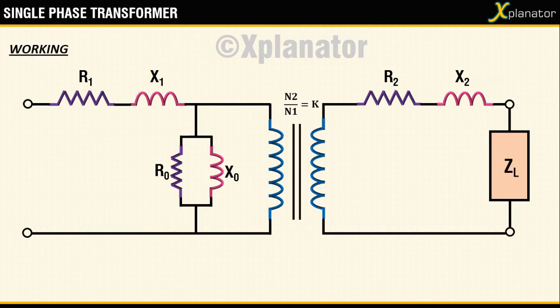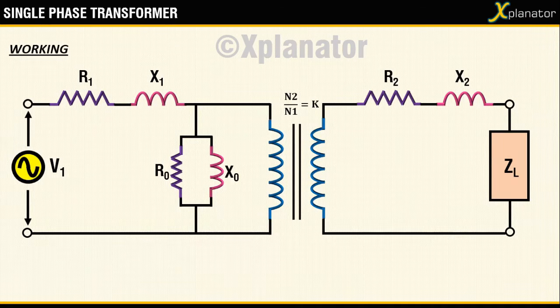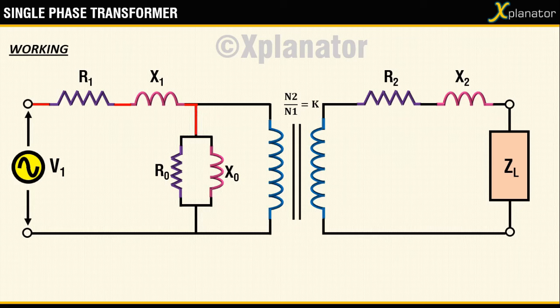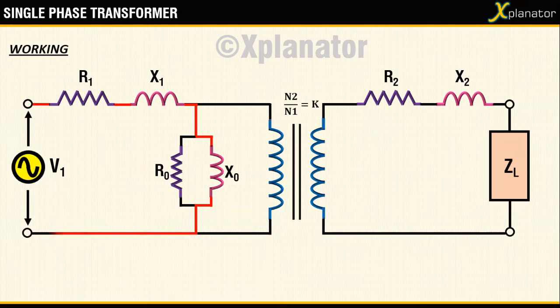Now coming to the working, when an AC supply V1 is connected across the primary side, as the primary circuit is closed, current starts flowing in the circuit. We call this current as primary current I1.